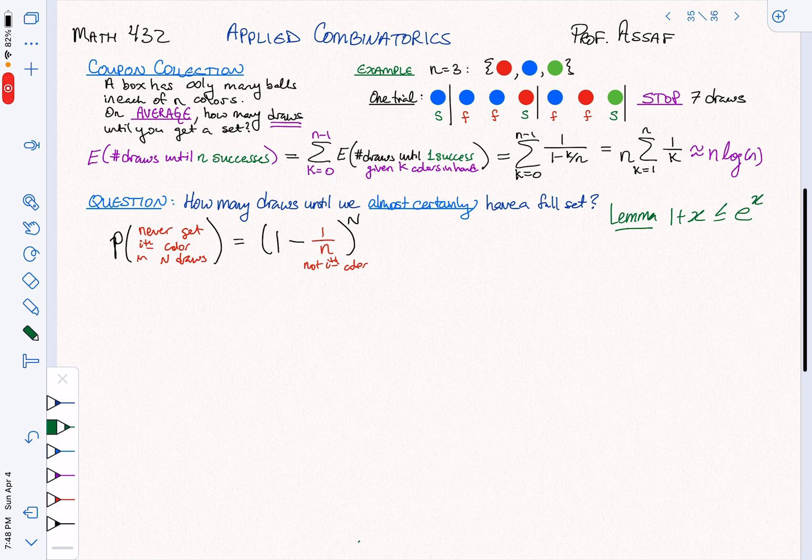This is actually a pretty good bound when x is small. When x is small, like for example x equals minus 1/n, this says that I can approximate that and bound it by e to the minus 1/n. That's exactly what I'm going to use here. So I'm going to say this is at most e to the minus n over little n.